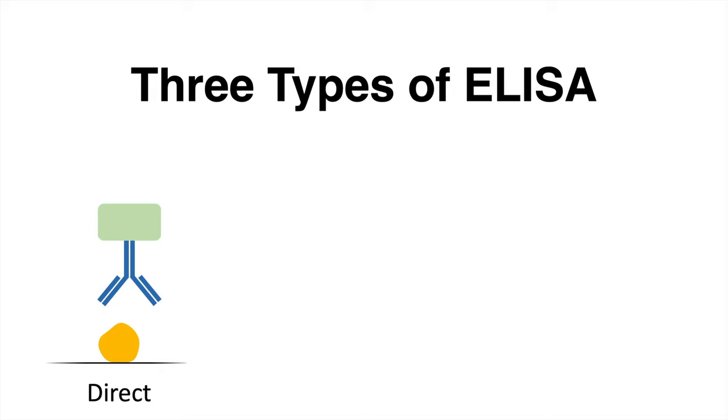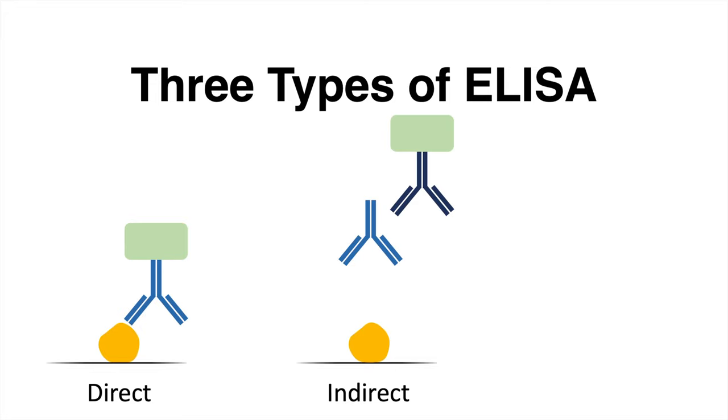In the indirect ELISA, a primary antibody binds our antigen and then a secondary antibody binds the primary antibody. The secondary antibody is enzyme-linked.